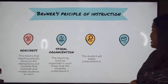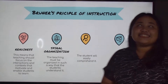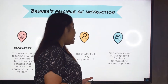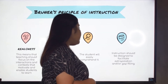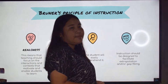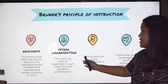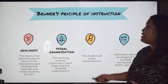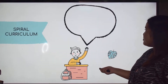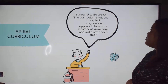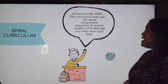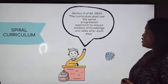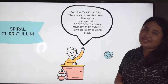Next, the student will easily comprehend it. And lastly, instructions should be designed to facilitate extrapolation and filling the gap. Now, regarding this second principle — the spiral organization — let us go to the legal basis of it. Section 5 of Republic Act 10533 says that the curriculum shall use the spiral progression approach to ensure mastery of knowledge and skills after each step.